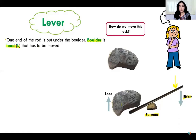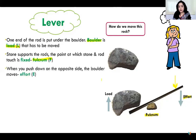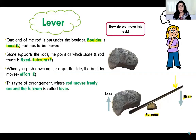The tilted end upwards, where we'll put the force, is called effort. One end of the rod is put under the boulder, and the boulder is the load. We'll put a fulcrum in between this load and effort. The stone supports the rod, and the point at which the stone and rod touch is fixed — this is the fixed point, what we call the fulcrum. E stands for effort and L stands for load. So when you push down on the opposite side, the boulder moves because of the effort made. This type of arrangement where a rod moves freely around the fulcrum is called a lever.